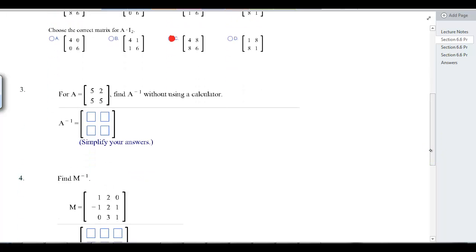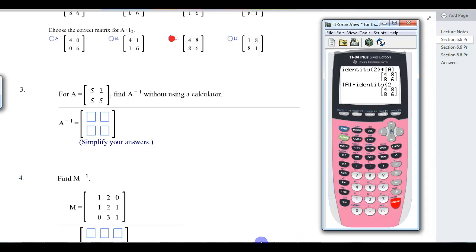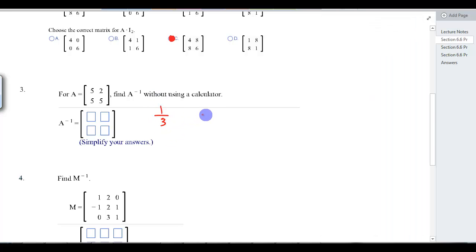Now, number 3 says without a calculator. All that's going to tell you is that you're supposed to be doing it without a calculator and that the answers probably should be in fractions. So let's go ahead and do this one. Second matrix, and we'll put in 5, 2, 5, 5. Second quit, second matrix, A, inverse, enter. So we got decimals. Let's hit math, enter on fraction, and enter. So we get 1/3, negative 2/15, negative 1/3, and 1/3. So we can do that.